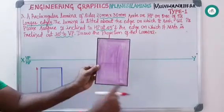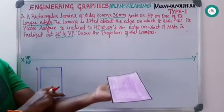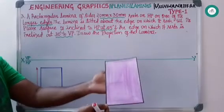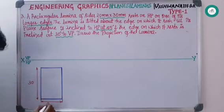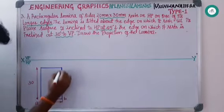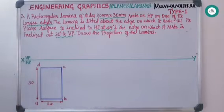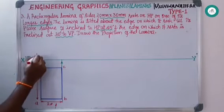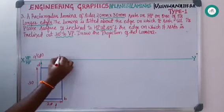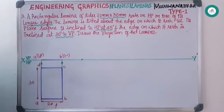This is the rectangular lamina — 30 mm and 20 mm — resting on one of its longer edges. If I look from the top, this is how it looks. I have drawn this and named the points A, B, C, and D. Project from all the points to get a front view. After projecting, from the front view, A is visible, B is visible, CD is not visible. So this is A dash, D dash, and this is B dash, C dash. Highlight this part.